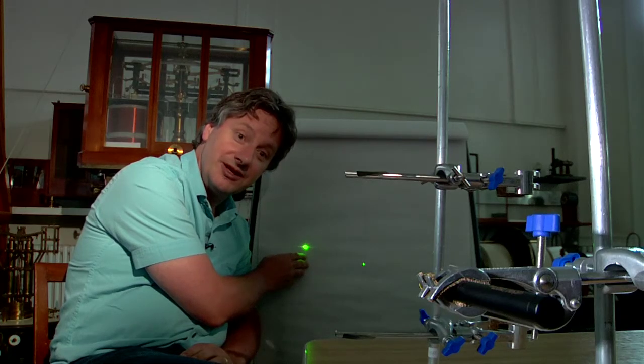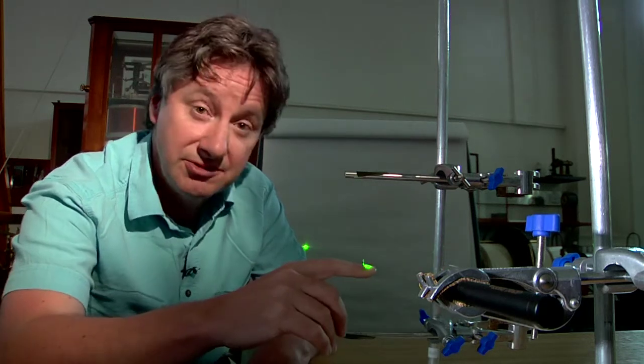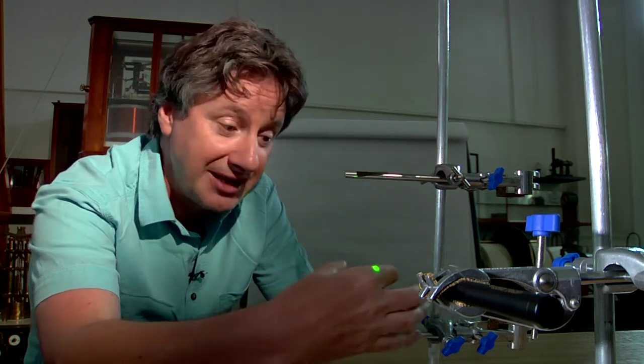So what's going on here? We can only explain this pattern if we understand that light travels through space as a wave. The light waves travel from the laser to the wire and they're diffracted as they pass either side of the wire.